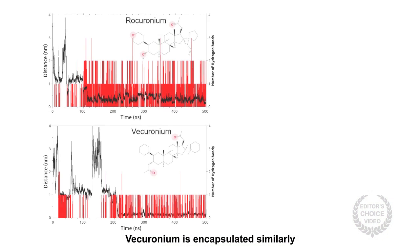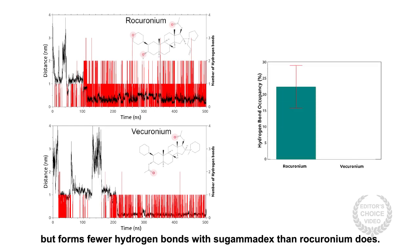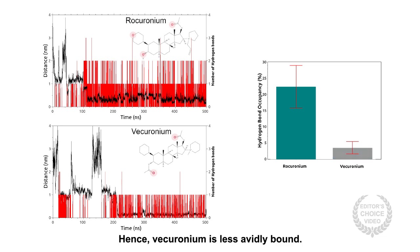Vecuronium is encapsulated similarly but forms fewer hydrogen bonds with Sugammadex than rocuronium does. Hence, vecuronium is less avidly bound.